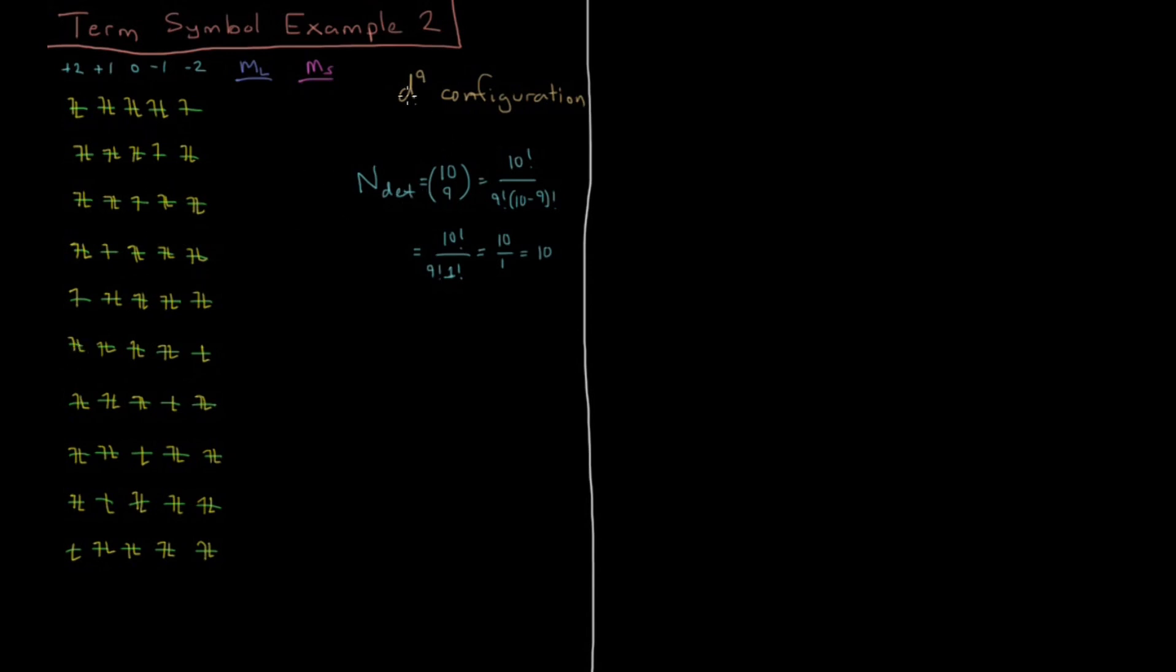We've got 9 electrons and 10 spin orbitals in a D subshell - 5 spatial orbitals with m_l values from plus 2 to minus 2, l being 2. We want to figure out how many ways to fit 9 electrons into 10 spin orbitals. That's 10 choose 9: 10 factorial over 9 factorial times 1 factorial, which gives 10 possibilities.